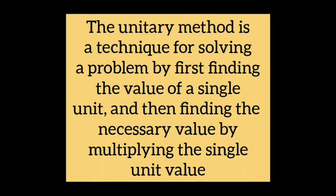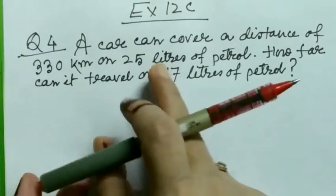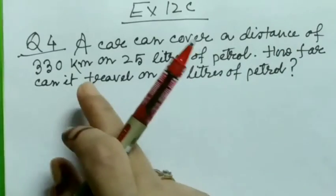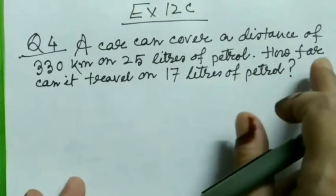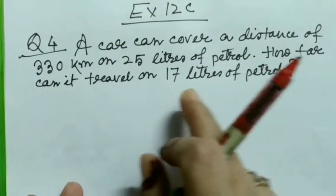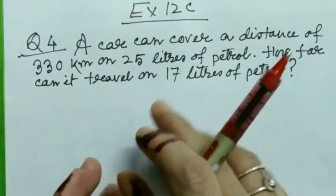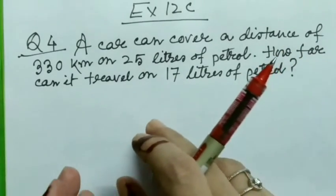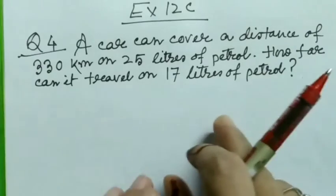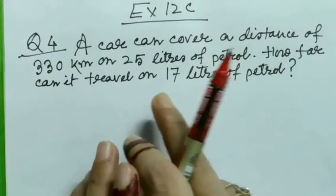Here are some questions solved by unitary method. Exercise 12C, question number 4: a car can cover a distance of 330 kilometers on 25 liters of petrol. How far can it travel on 17 liters of petrol? In this question, it is asked to find out the distance covered.